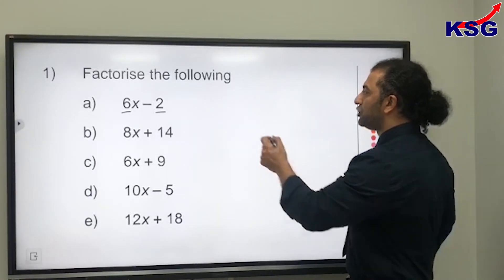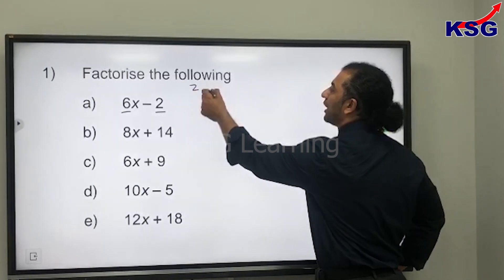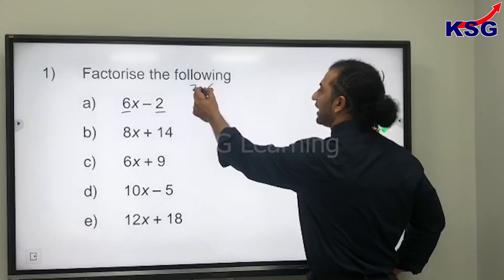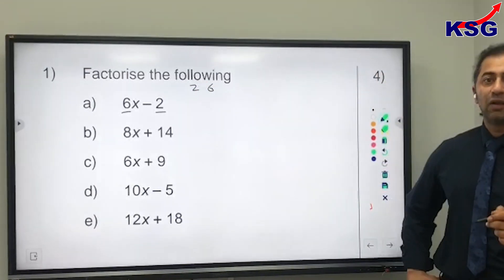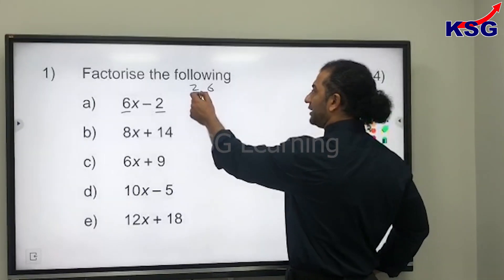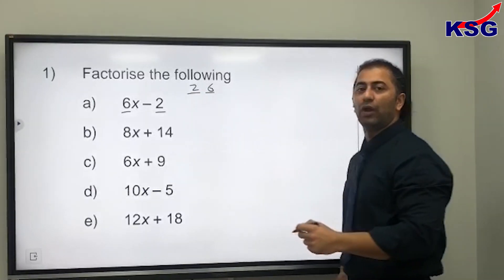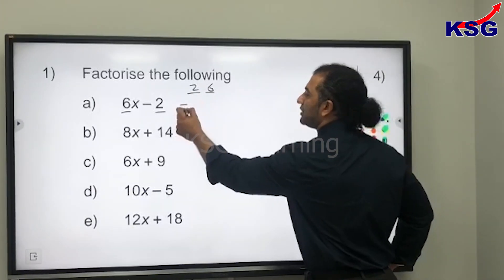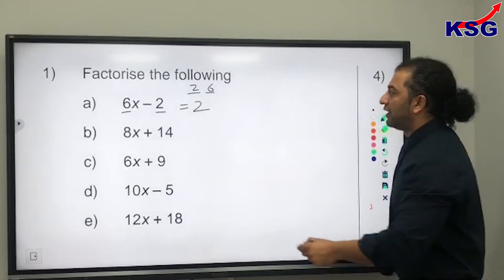I can clearly see that 2 is the biggest number that goes to both 2 and 6. So what we do is we take that 2 out and then we will start our brackets to factorize.